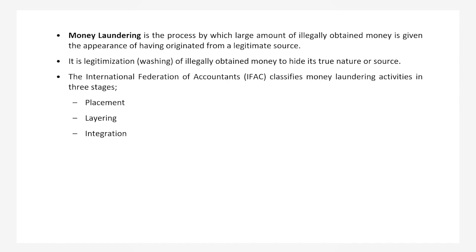To understand the process of money laundering, we must first refer to its concept. Money laundering is the process by which large amounts of illegally obtained money are given the appearance of having originated from a legitimate source — it is the legitimisation or washing of illegally obtained money to hide its true nature or source. The International Federation of Accountants classifies money laundering activities into three stages: placement, layering and integration.